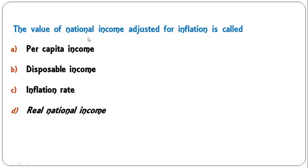Consider the following statements and identify the right ones: personal income refers to the income of the individuals of a country; income at their disposal after paying direct taxes is called disposable income — A only, B only, or both A and B? Both statements are correct, so both A and B — option E — is the correct answer.